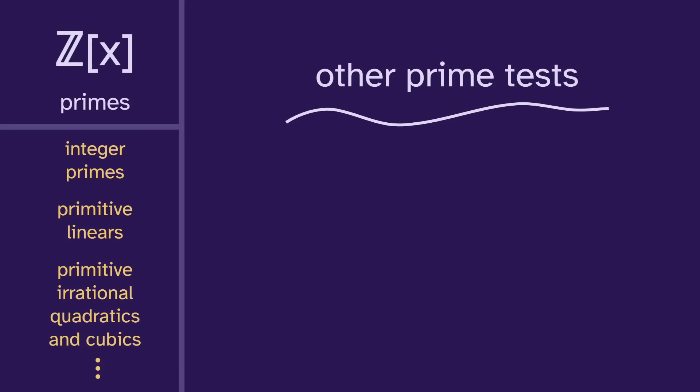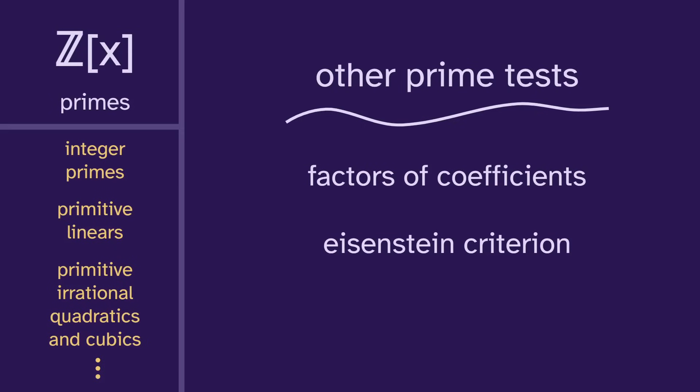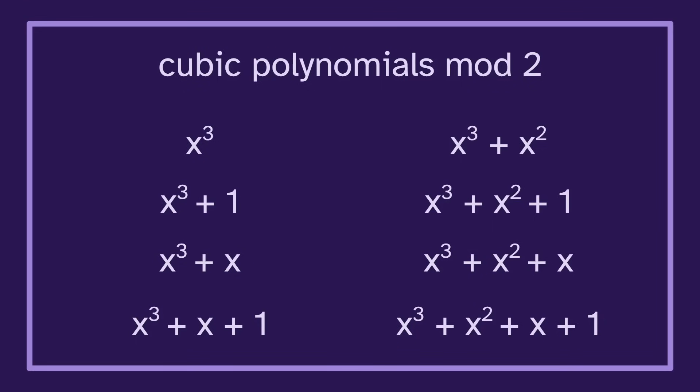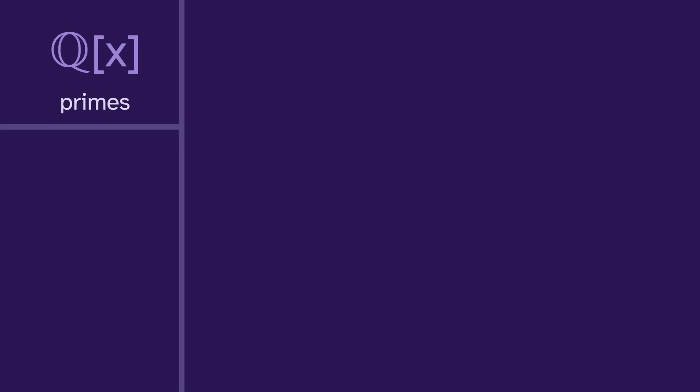There are some other prime tests that we can use, like checking the factors of the coefficients, or the Eisenstein criterion, or using modular arithmetic. I'll talk more about modular arithmetic in my next video, which will be all about applying modular arithmetic to prime polynomials. But for now, let's move on to the rational polynomial primes.